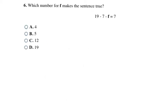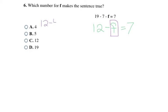This problem has a few more steps because it has a couple of numbers being subtracted. I'll simplify by doing 19 minus 7 first, which is 12. Now I still have minus F equals 7 — and it's just like the problem before. Testing answers: 12 minus 4 equals 8, not 7, so A can't be my answer. Then 12 minus 5 equals 7, which is what I'm looking for. So my final answer is B, which is 5.